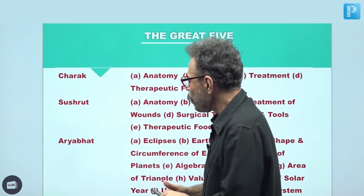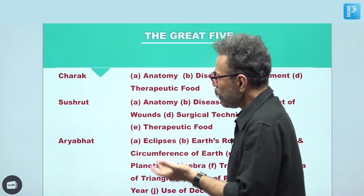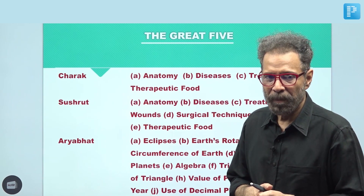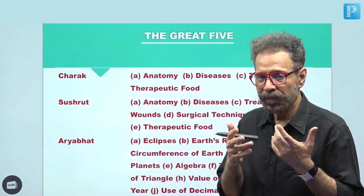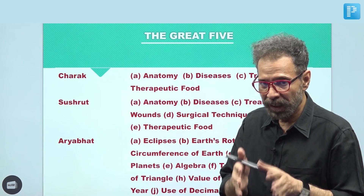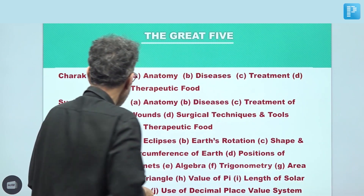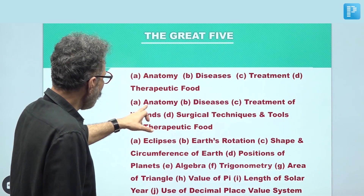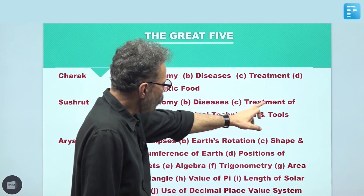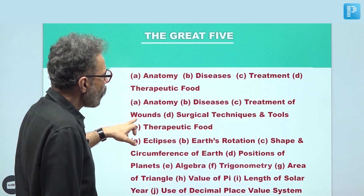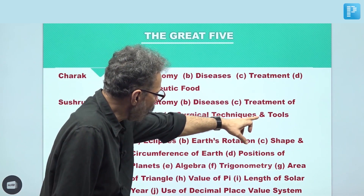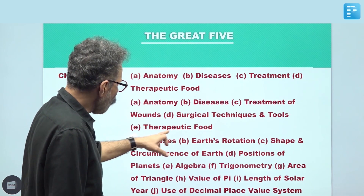Second is Sushrut. He was also associated with medical science, but his branch was surgery. He also wrote a text, Sushrut Samhita. Sushrut Samhita contains descriptions of: A, anatomy, that is human anatomy; B, diseases, human diseases; C, treatment of wounds, because his focus was surgery; D, surgical techniques and tools; and E, therapeutic food.